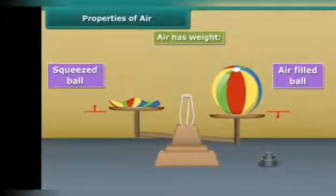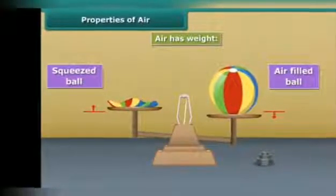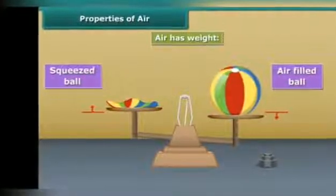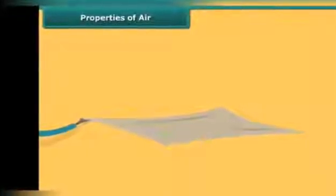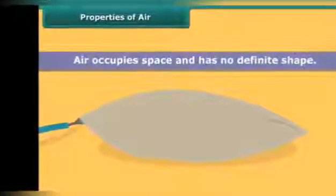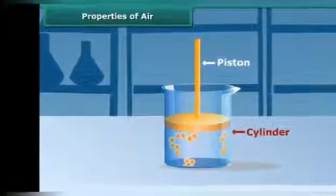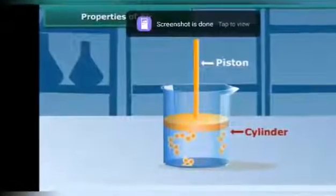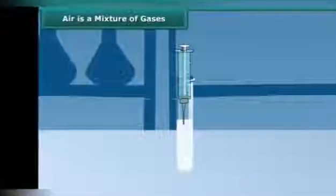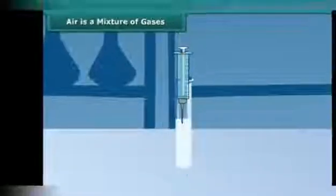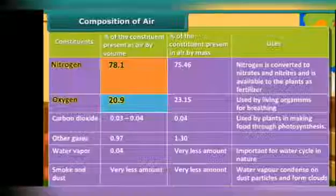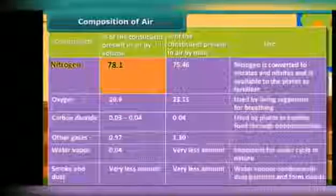Air has weight. We put two balls - one filled with air and one without. The air-filled balloon has more weight. If you inflate a cushion with air, it inflates equally in all directions. It occupies space and can be compressed easily. Air has dust particles. The table shows the composition of air and their uses.